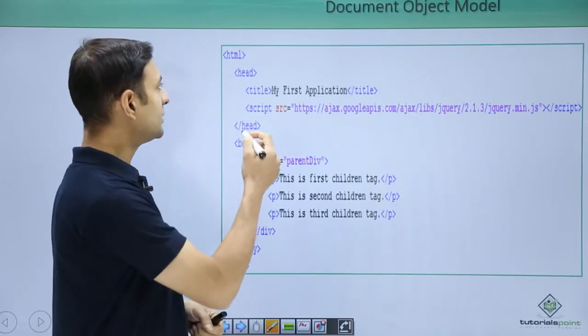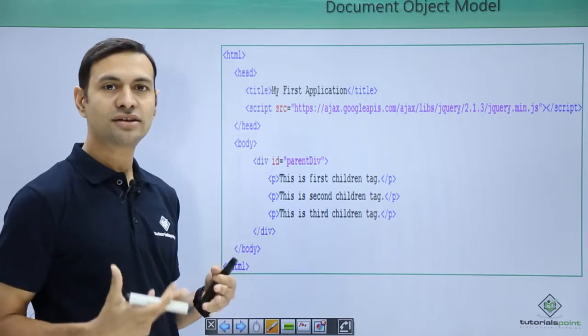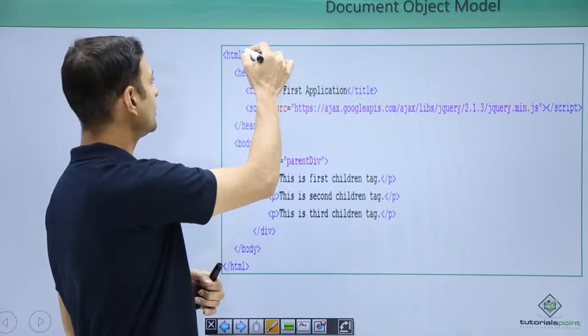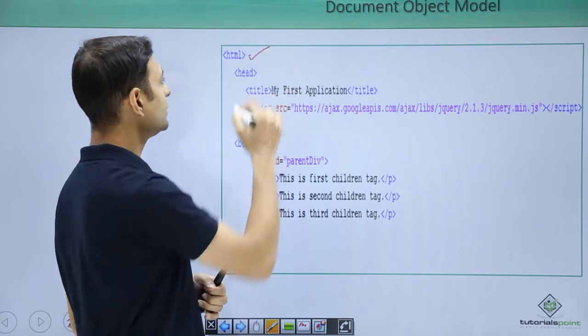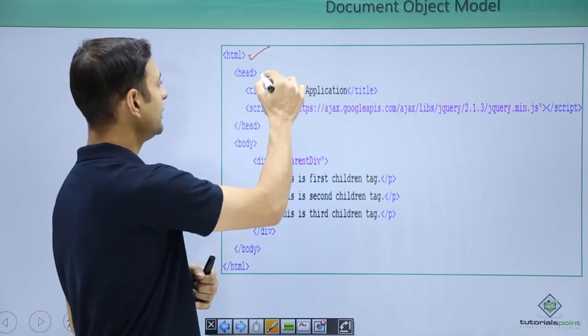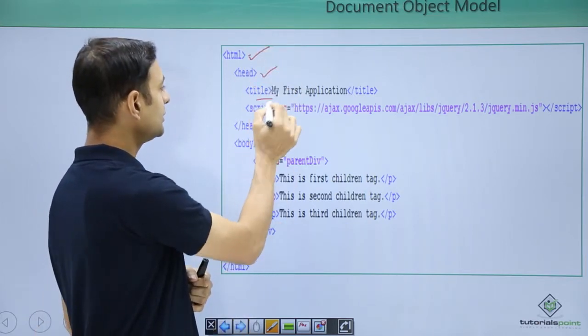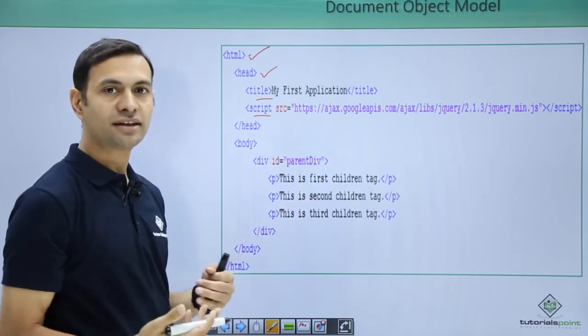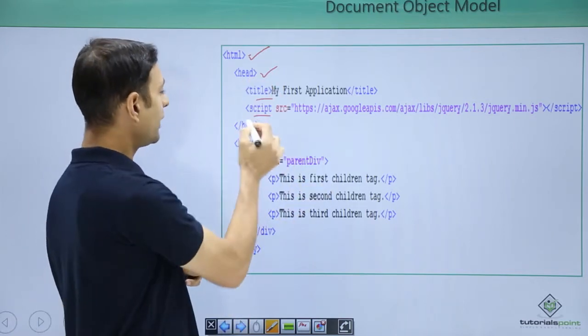So DOM starts with HTML. DOM is basically a tree structure which starts from the root, your HTML. Then it has head. Head contains title, script, style, anything else. Then your head ends.